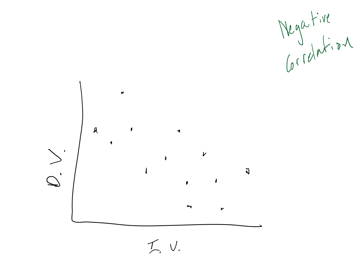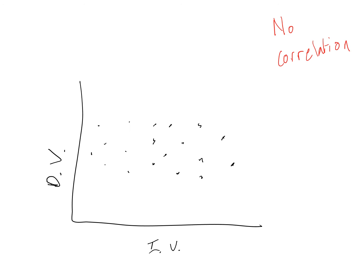If people who have higher values for the independent variable tend to have lower values for the dependent variable, as shown here, we call this negative correlation. If there's no relationship between the two variables, as shown here, we say there's no correlation.